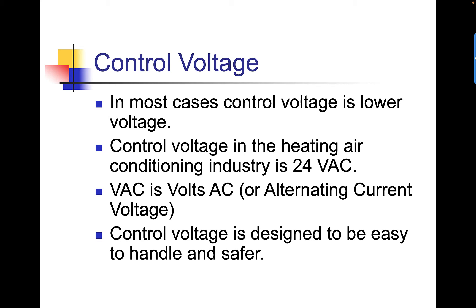Control voltage, in most cases, is lower voltage. Control voltage in the heating and air conditioning industry is 24 VAC. VAC is known as volts AC, or alternating current voltage. Control voltage is designed to be easy to handle and safer.